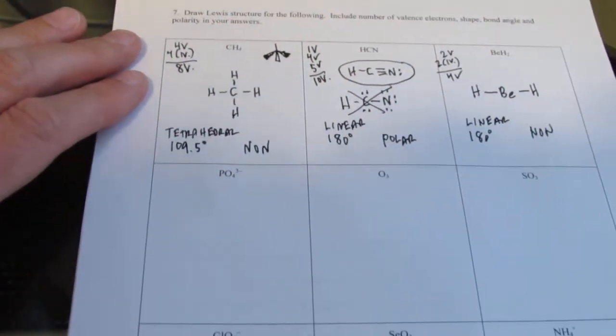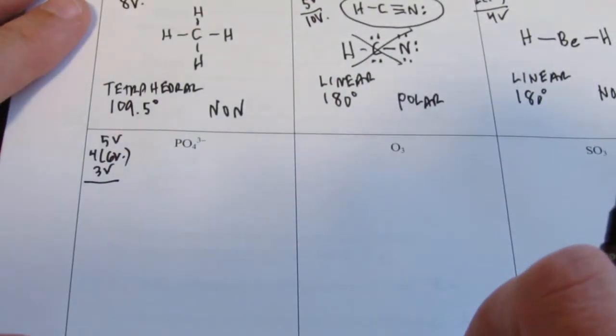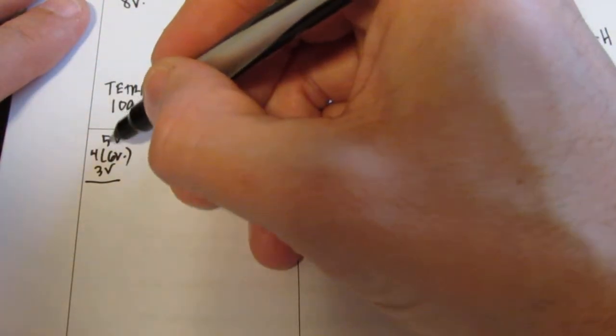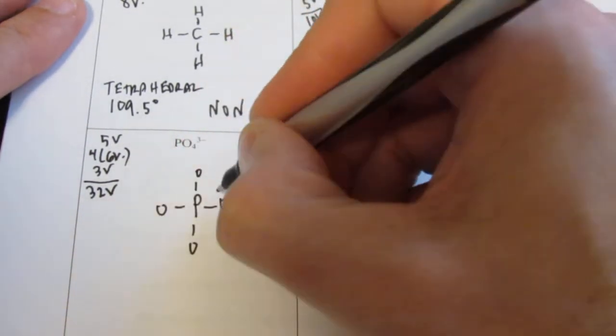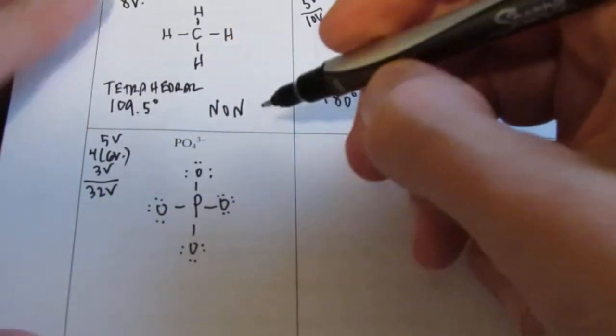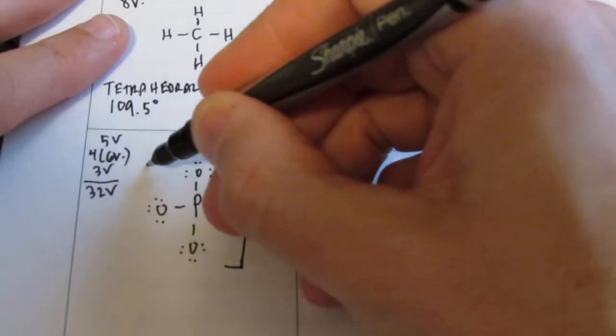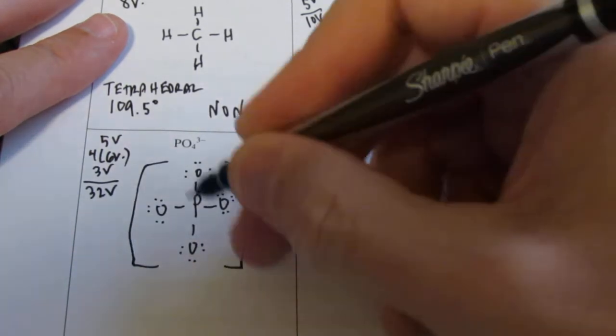PO4³⁻. Phosphorus has 5 valence, each oxygen has 6 valence, and I want to add 3 to the total because it's a negative 3 charge — that means I had to dump in 3 additional electrons. So I have 24 plus 5, that's 32 valence. Let's put the oxygens on the four sides of phosphorus with a single bond, then give each oxygen a full octet. Since it's an ion, I put brackets around it and put the charge on the outside, so the reader knows I had to add 3 electrons to complete that Lewis structure.